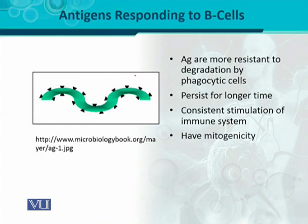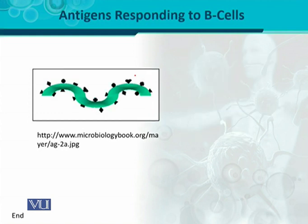These antigens have mitogenicity. Mitogenicity means that when the B cell surface immunoglobulin engages them, B cell mitosis or proliferation starts. They activate in such a manner that they replicate, proliferate, and finally differentiate into plasma cells.